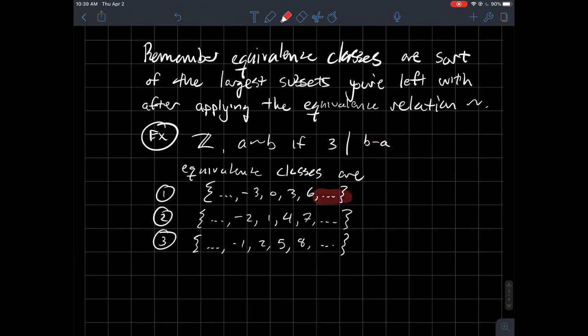You would have all these numbers, 0, 3, 6. All those numbers are equivalent to each other because if you picked any two of them, say 6 and negative 3, their difference would be 9,